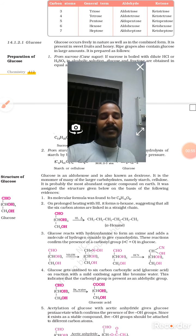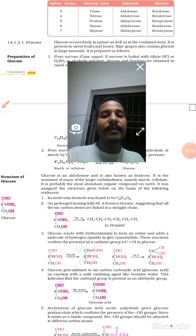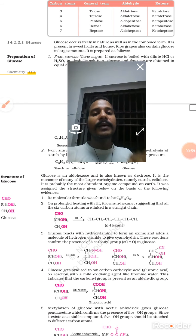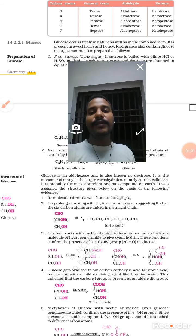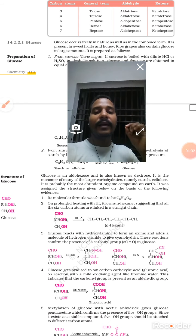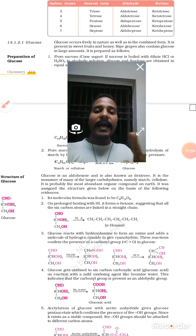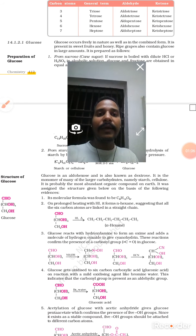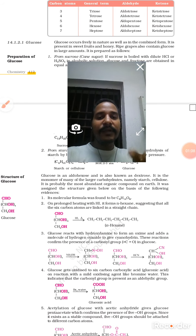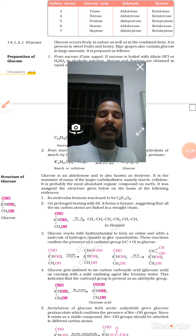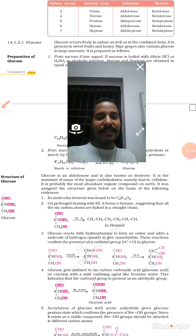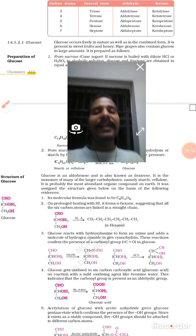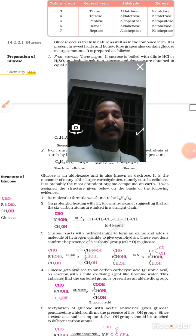Polysaccharides, as discussed earlier, are nothing but naturally occurring polymers. For example, starch, which is present in plants, and glycogen, which is present in animals. There are many more examples like chlorophyll, melanin, and much more.